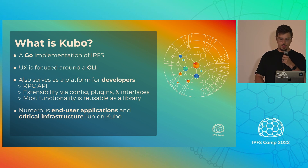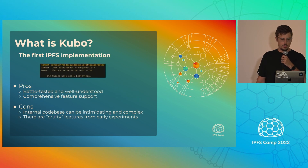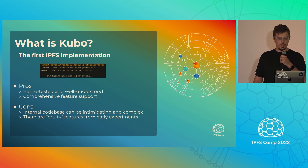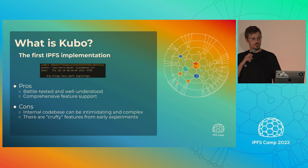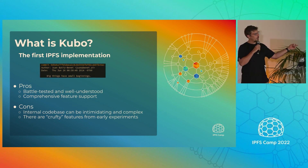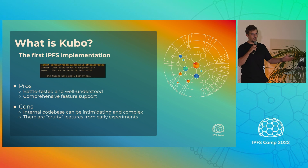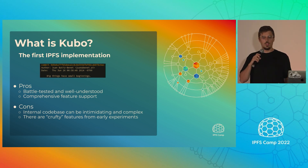There's a lot of end-user applications and critical infrastructure running on Kubo. I showed this in the intro presentation, but I love this commit — big things have small beginnings. One of the benefits of Kubo being the first implementation is that the code is super battle-tested. It's been run for eight years on critical infrastructure, which weeds out a lot of bugs.